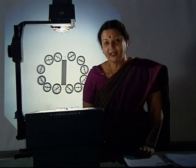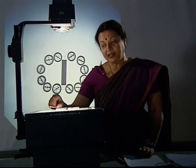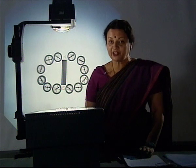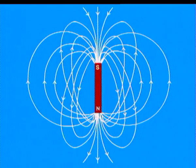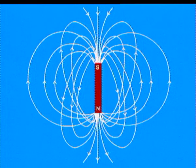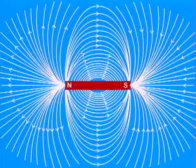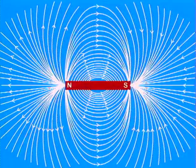Remember that the magnetic field lines of a magnet are not confined to a plane, but are in a region all around the magnet. We can observe that the field lines emerge from the north pole of a magnet and merge at the south pole.